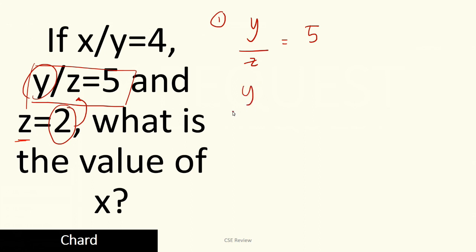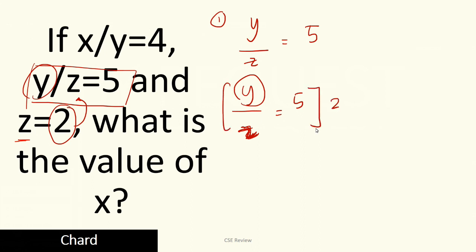What you would do is substitute 2 for z. So the first equation is y over z equals 5, and since z equals 2, y over 2 is equal to 5. To get y, all we need to do is multiply both sides by 2. If you haven't seen the video on equalities, go ahead and watch that first. So y is equal to 5 times 2, or y equals 10.